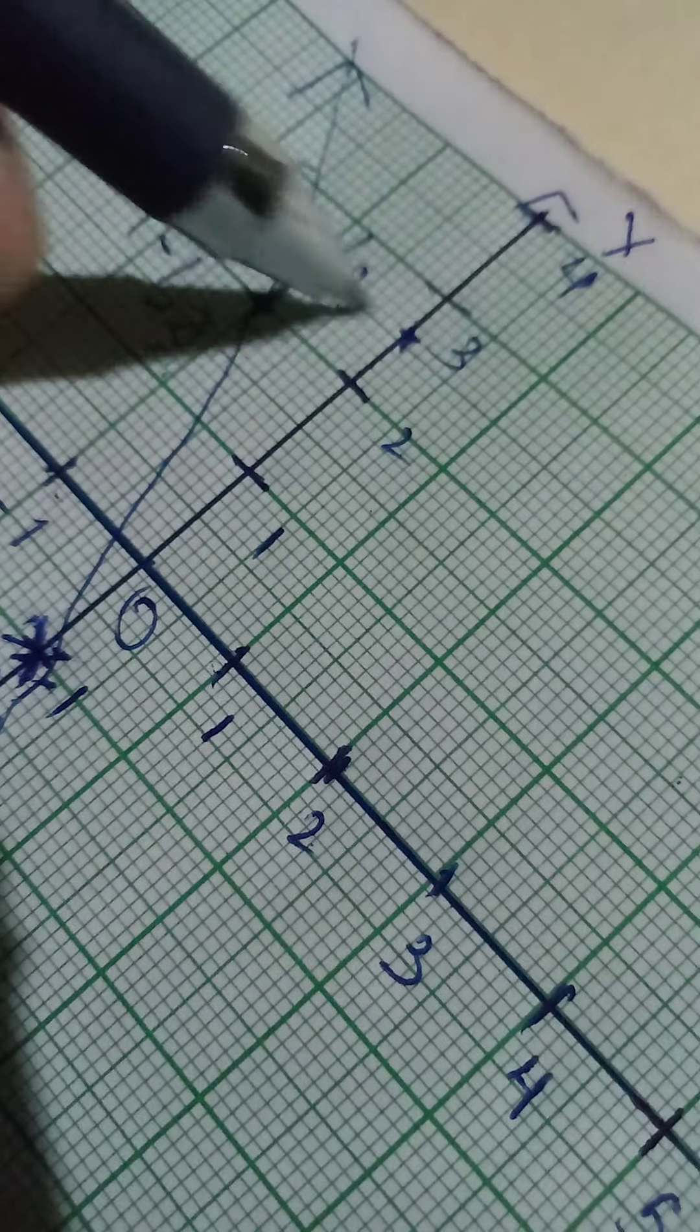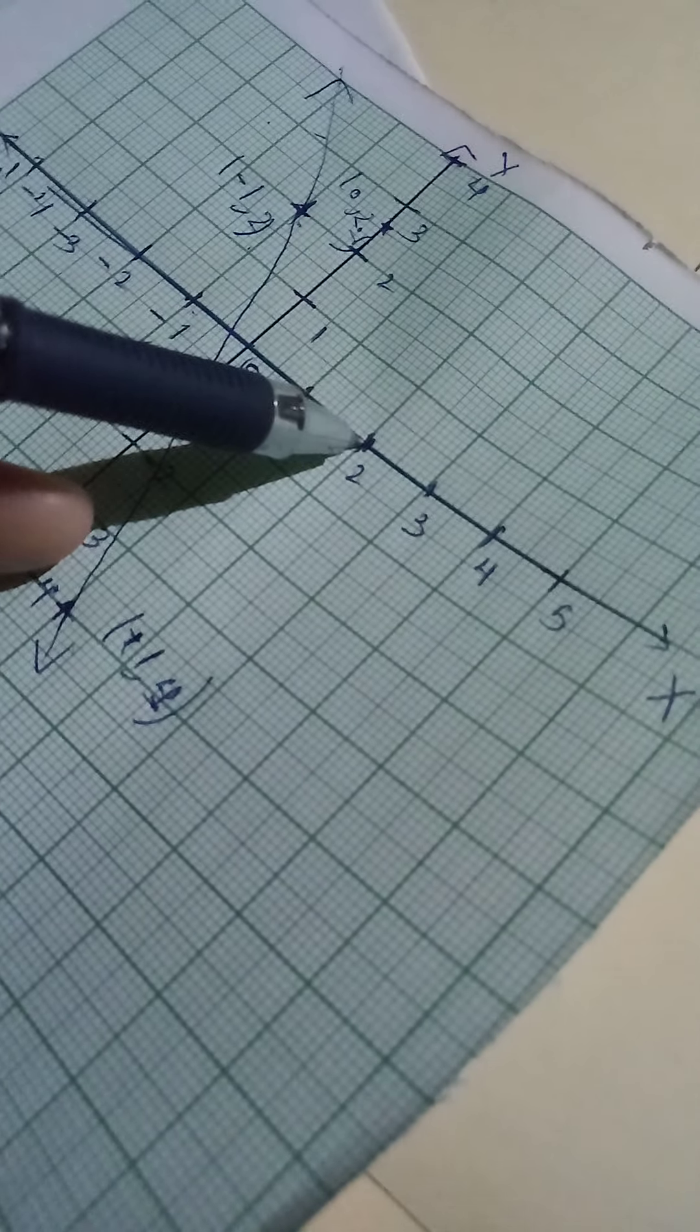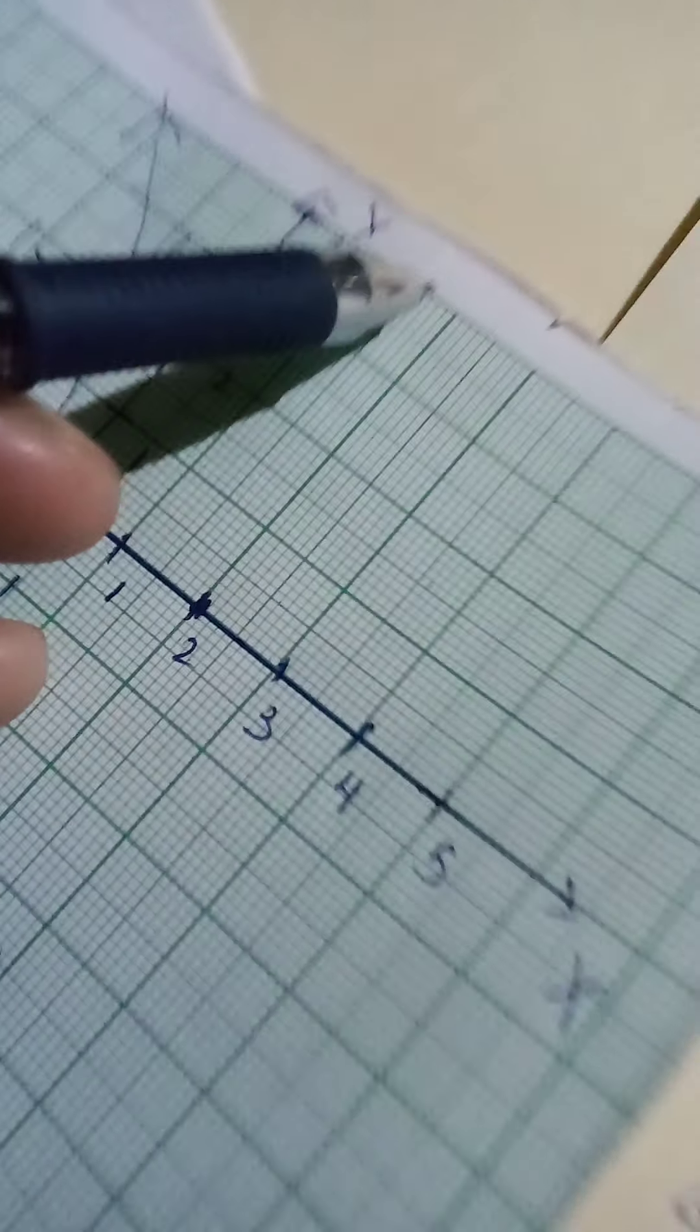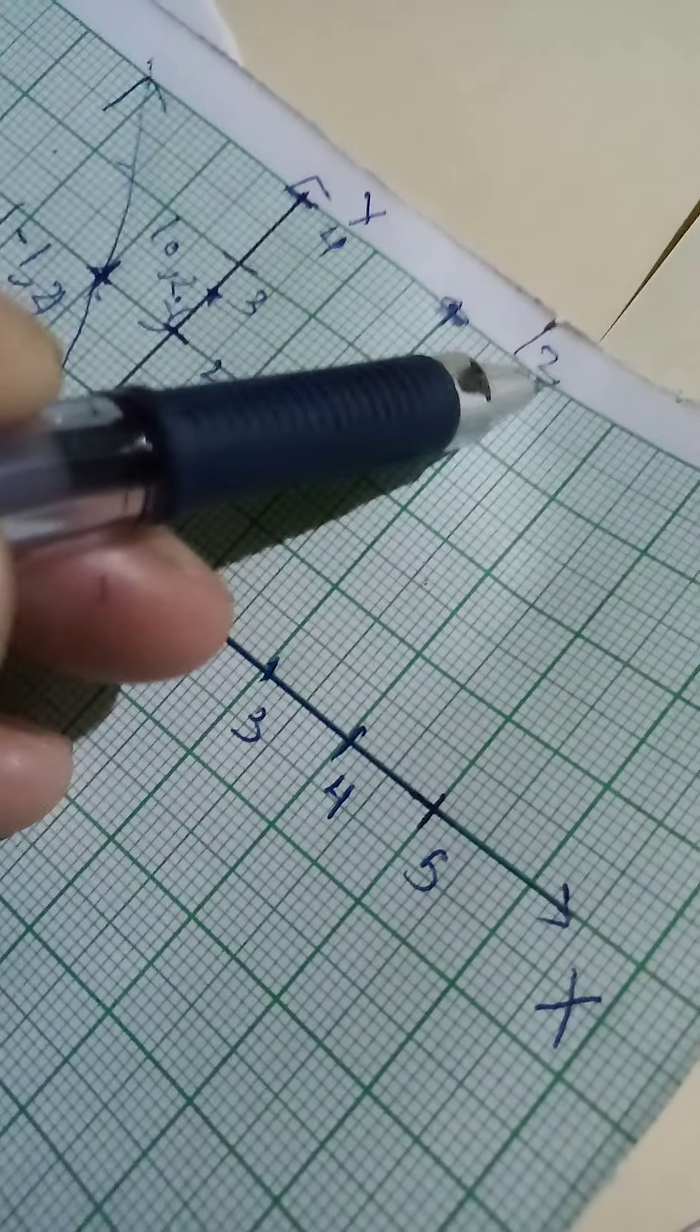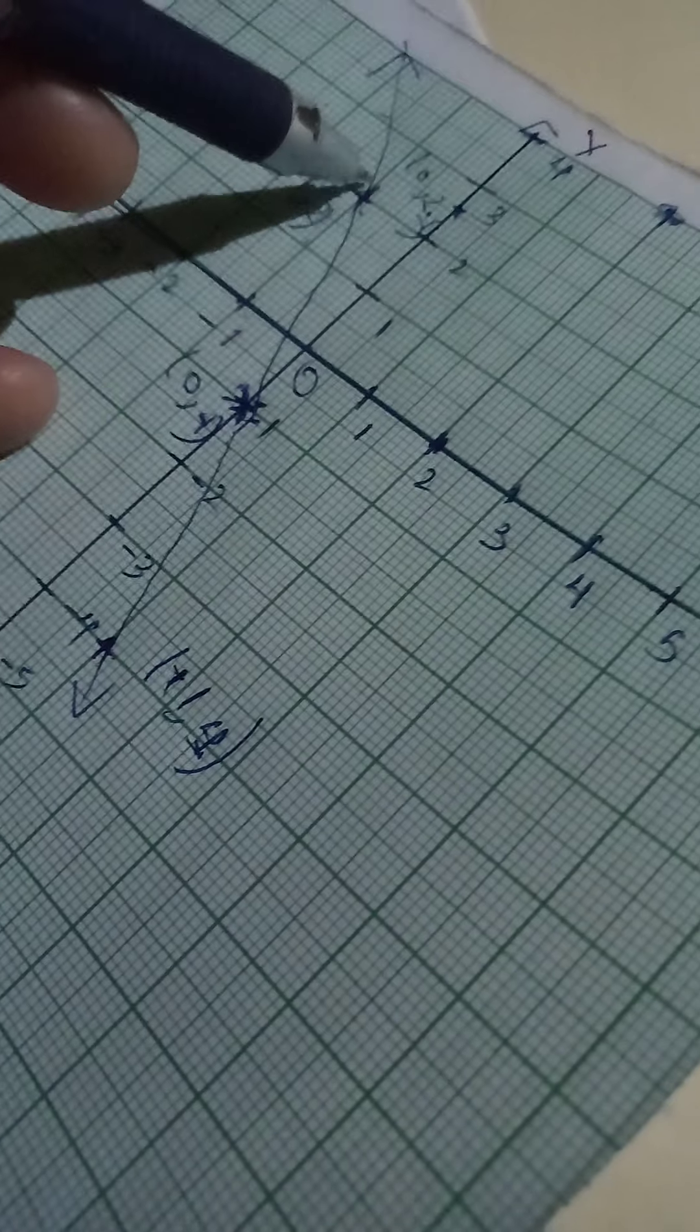Then we have 2, 4. So X is 2, Y is 4. You can take it up there, exactly on the line. 2, 4. Then we have minus 1, 2. X is minus 1, Y is 2.